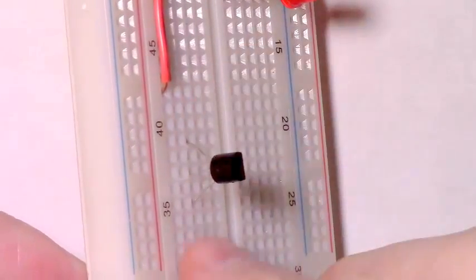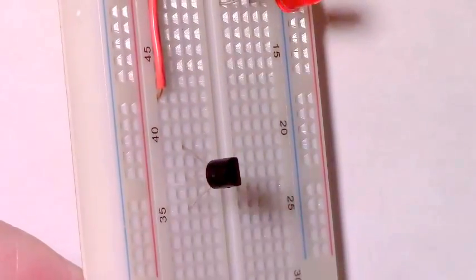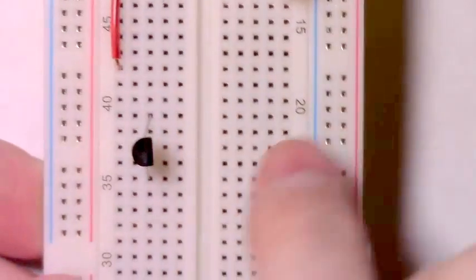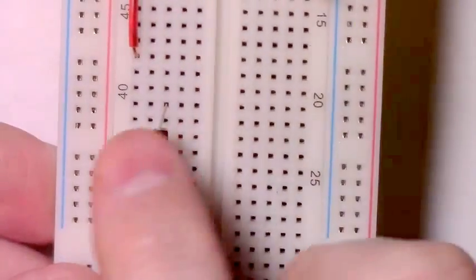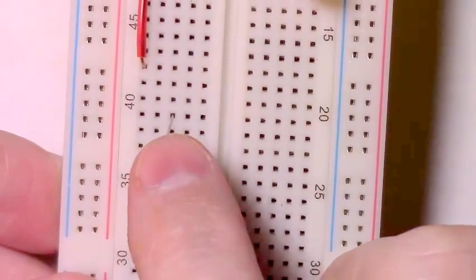There's the collector of our transistor. There's the emitter. The base is in the middle. On the one that I'm using, the flat side is pointed toward the right of the breadboard. But you'll need to test yours to make sure.